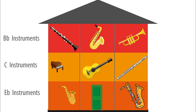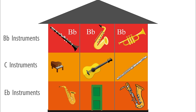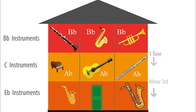Now, if the Bb instruments on the top floor play Bb on their instruments, what do the other instruments play? Well, the C players play a tone lower: Ab. And the alto and baritone saxes in Eb play a minor third below this Ab of the piano. A minor third below Ab is — yes — three semitones: F.